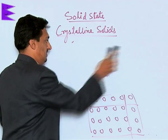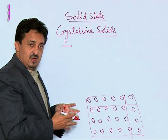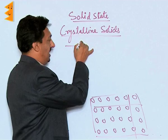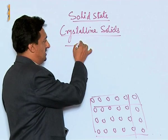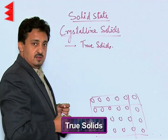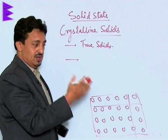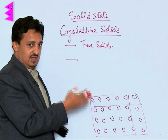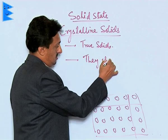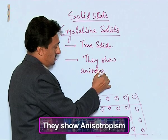Since these solids have strong interparticle forces, they have an exact or sharp melting point. They are also called true solids, whereas amorphous solids are called pseudo solids. Crystalline solids are called true solids because they are exactly solid before their melting points and they remain in that solid state.